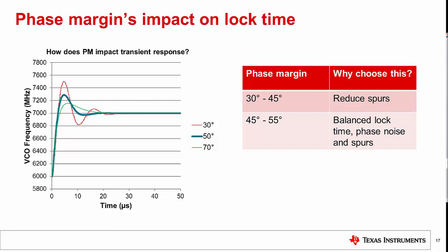A 48 degree phase margin is a good choice for optimal lock time. Higher phase margin, up to about 80 degrees, are good for a flat loop filter response, which is a desirable response for reducing jitter.